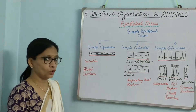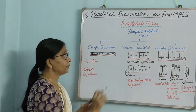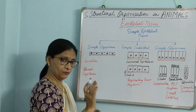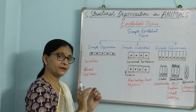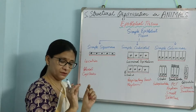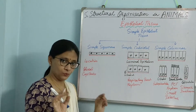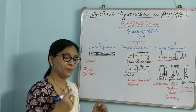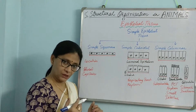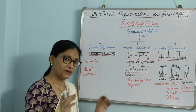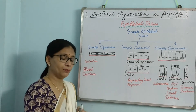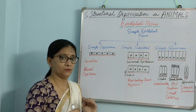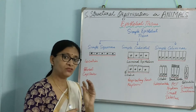Now let us talk about simple epithelial tissue. Simple epithelial — we know that these tissues are made up of one layer, one layer of epidermal cells. That means they are very thin and they are found in places which are also thin and very small.